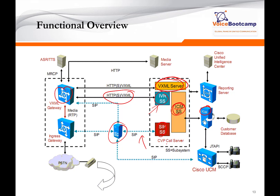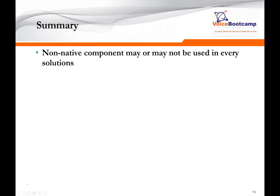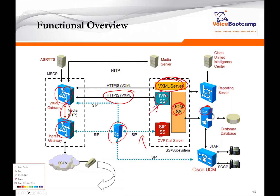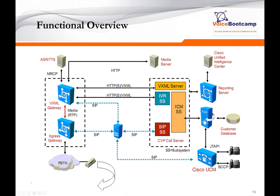The VXML gateway communicates with the Ingress gateway using the RTP protocol. For example, when a customer calls in and UCCE decides the customer is going to hear a welcome message, the welcome.wav file is located on the media server and will be downloaded to the router. From the router, the call will go to the voice gateway using the RTP channel so that the user hears the welcome prompt.